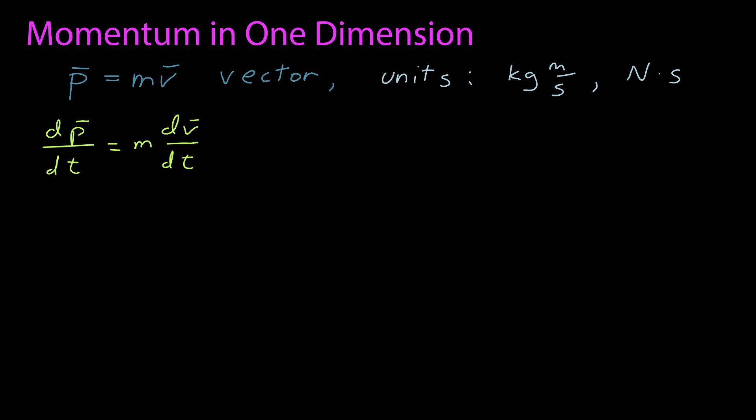To take a look at how momentum is related to forces, differentiate both sides. I have the derivative of momentum on the left, and on the right, since mass is a constant, I have the derivative of velocity. The derivative of velocity is the acceleration, and mass times acceleration is the net force. So the net force is the derivative of the momentum.